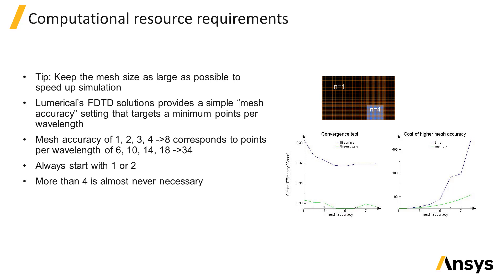In the second figure, you can see the cost in time and memory of the higher mesh accuracy setting normalized to a mesh accuracy setting of 1. You can see that it takes almost 600 times longer to run with a mesh accuracy setting of 8 compared to 1.